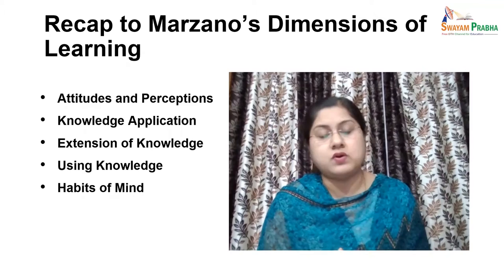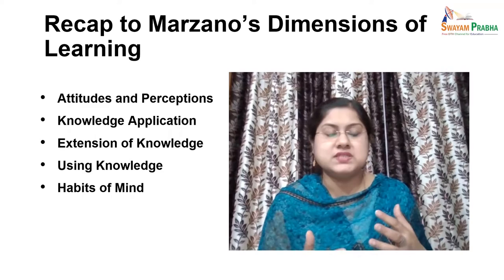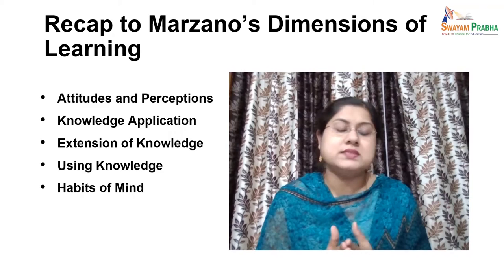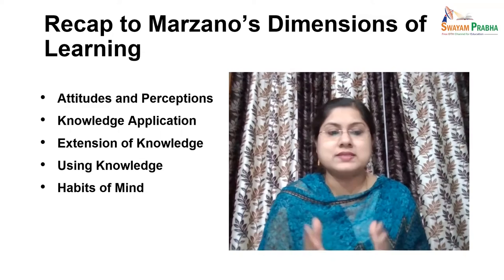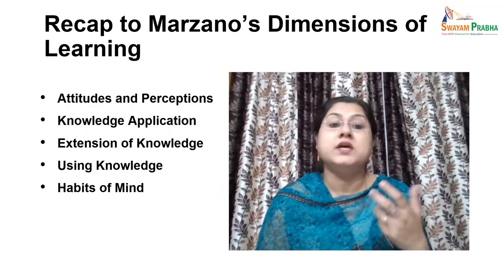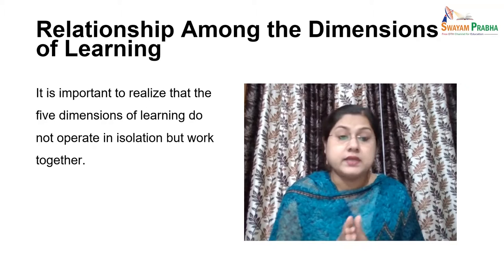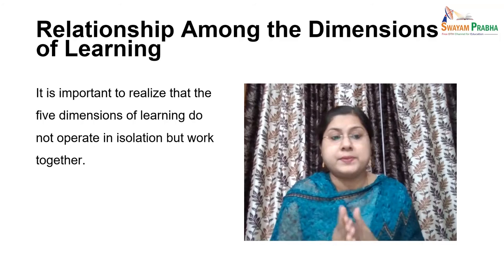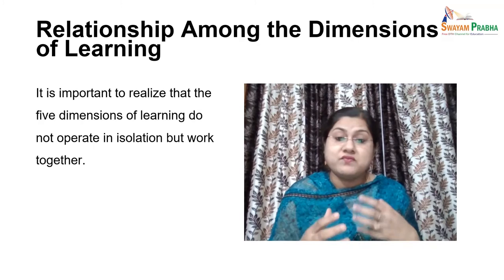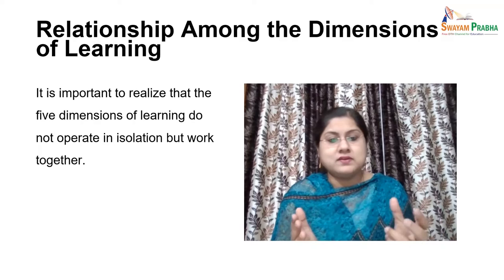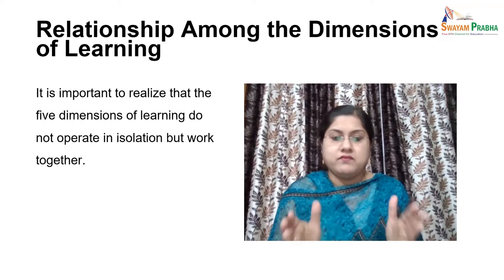All five dimensions work together in a very orderly manner. In this discussion, we will see in which way Marzano has given a model where all five dimensions work together. To check the relationship among the dimensions of learning, it is important to realize that the five dimensions do not operate in isolation — they work together in a way where one is actually facilitating the other. There is a diagram through which all these dimensions' relationships have been shown.